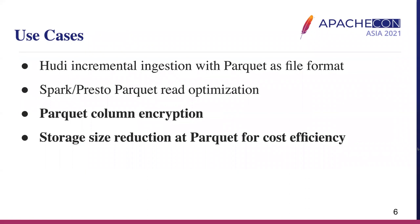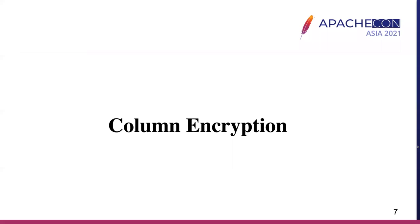The typical use case is Hudi incremental ingesting with Parquet format and Spark reading with some data optimization. We have Parquet column encryption to secure the data. We also have cost efficiency initiatives to optimize storage cost. In today's talk, we focus on the last two initiatives: Parquet column encryption, storage size reduction, and Parquet for cost efficiency. Now I'll hand it over to Jianchun to talk about column encryption.